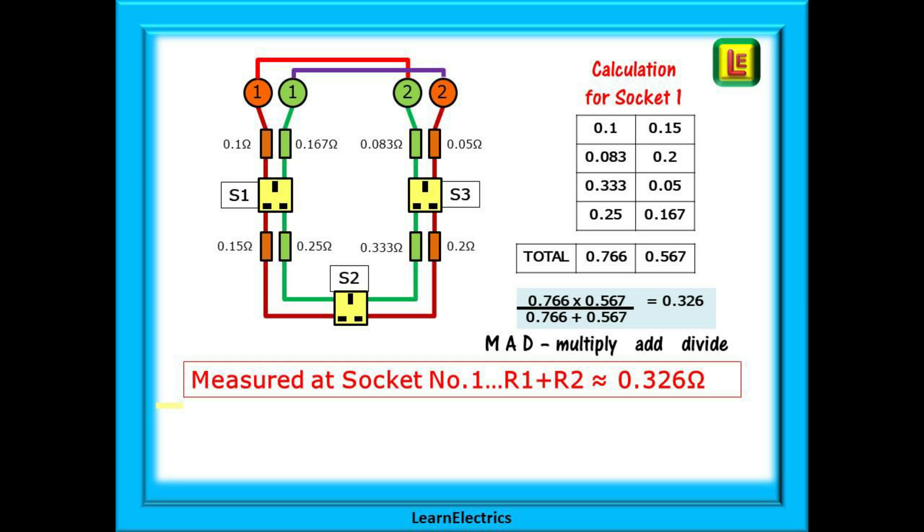This is sometimes called the MAD method: multiply, add, divide. And if we measure this with our test meter we should get about the same number, 0.326 ohms. We have used a wavy equals sign here to indicate that it might not be exactly the same, it's an about value.